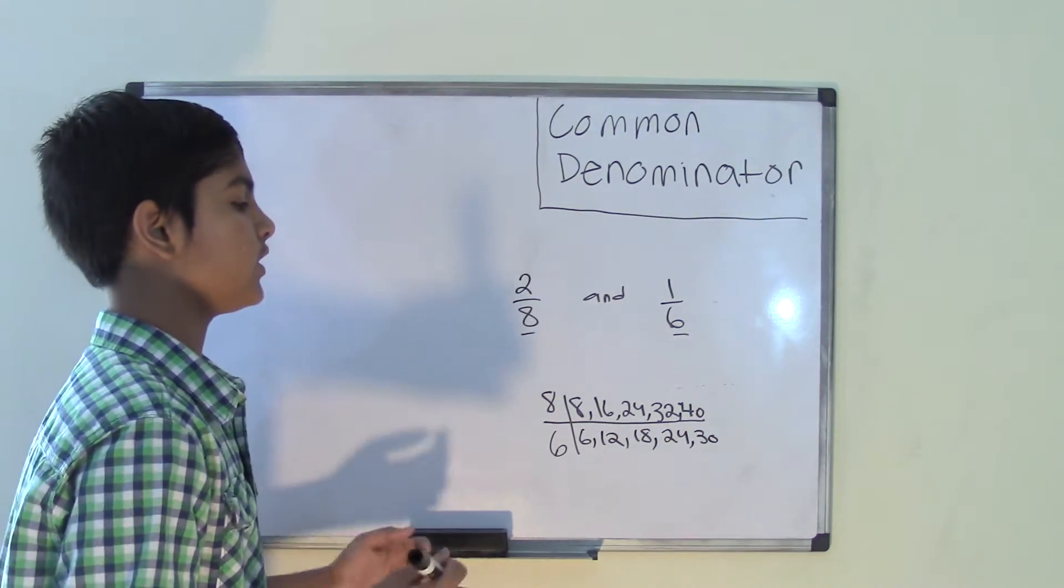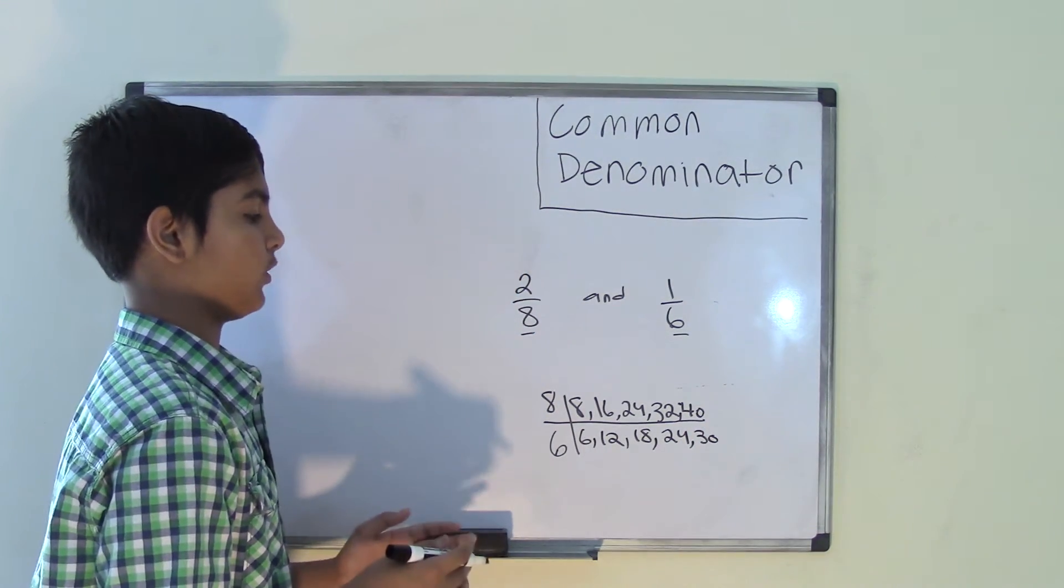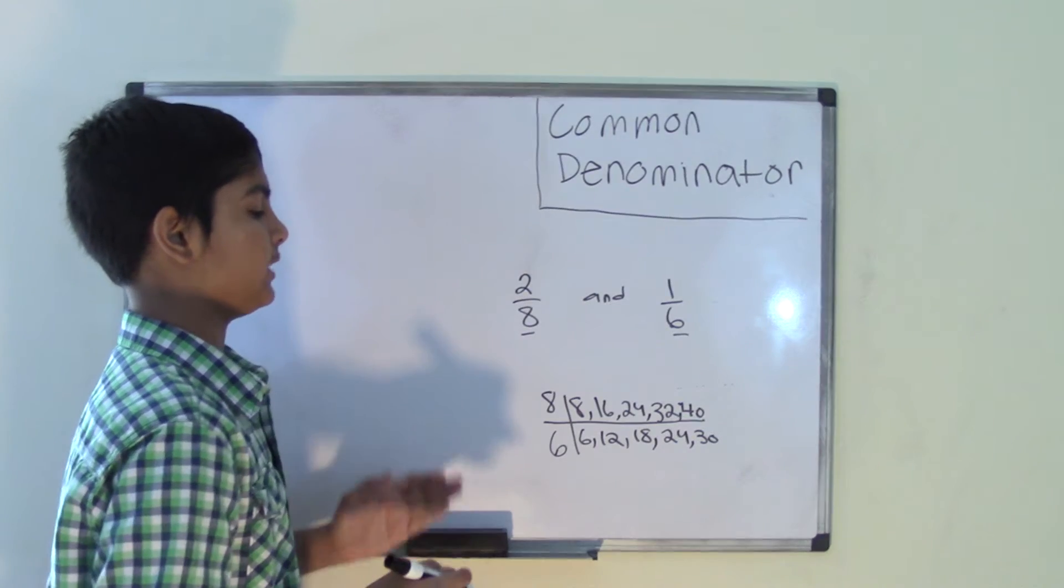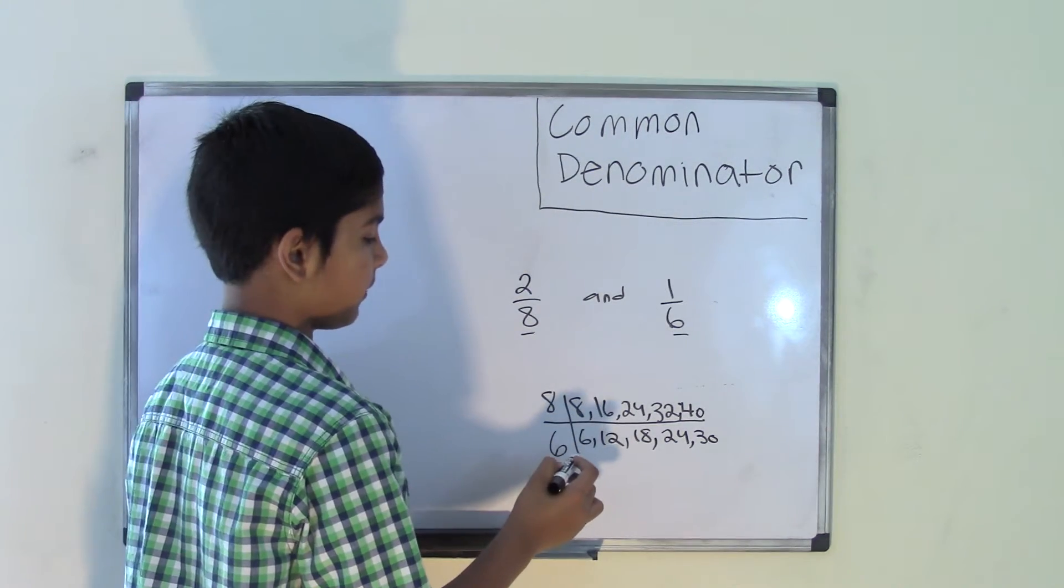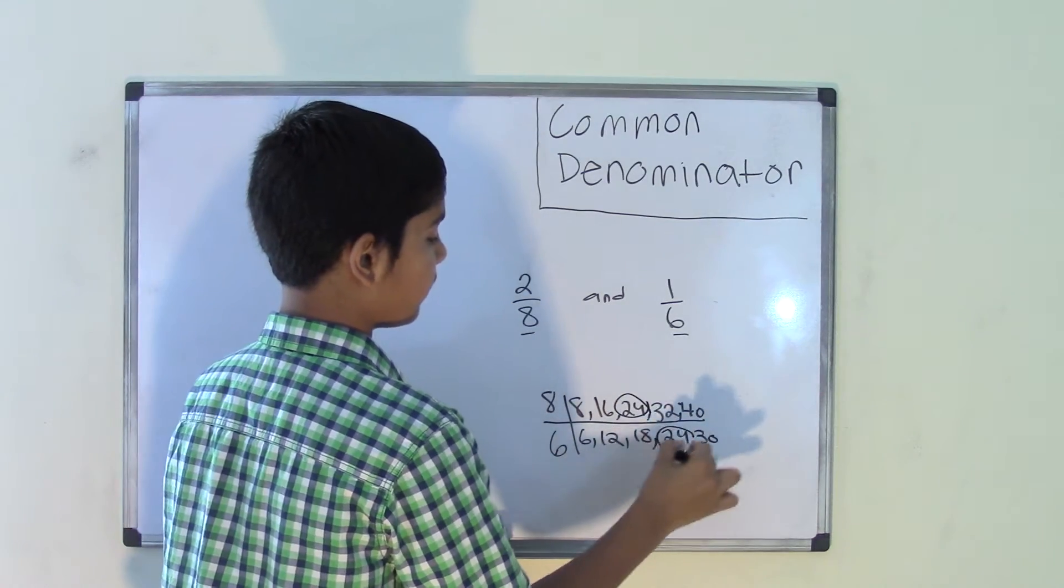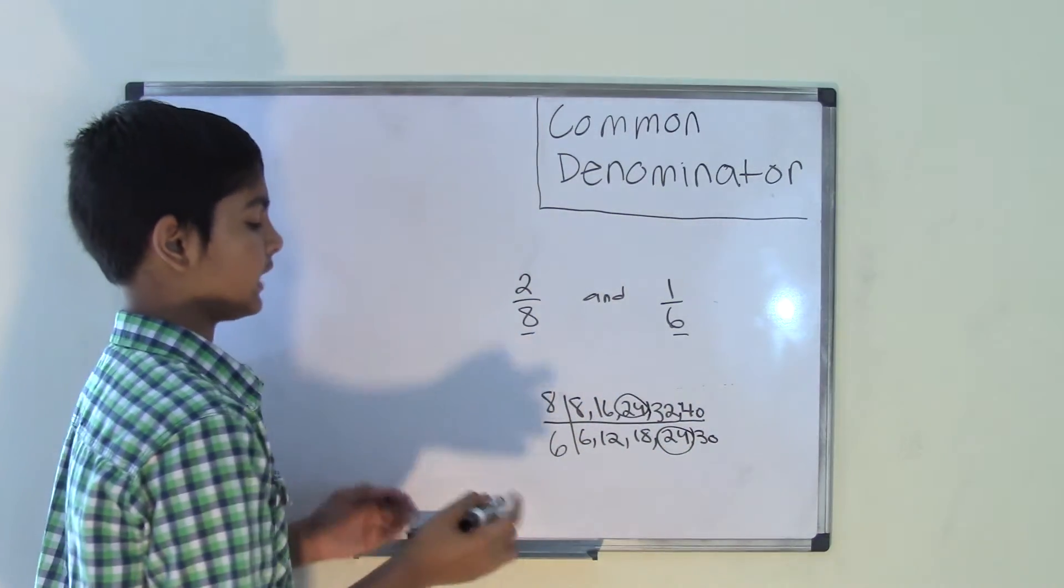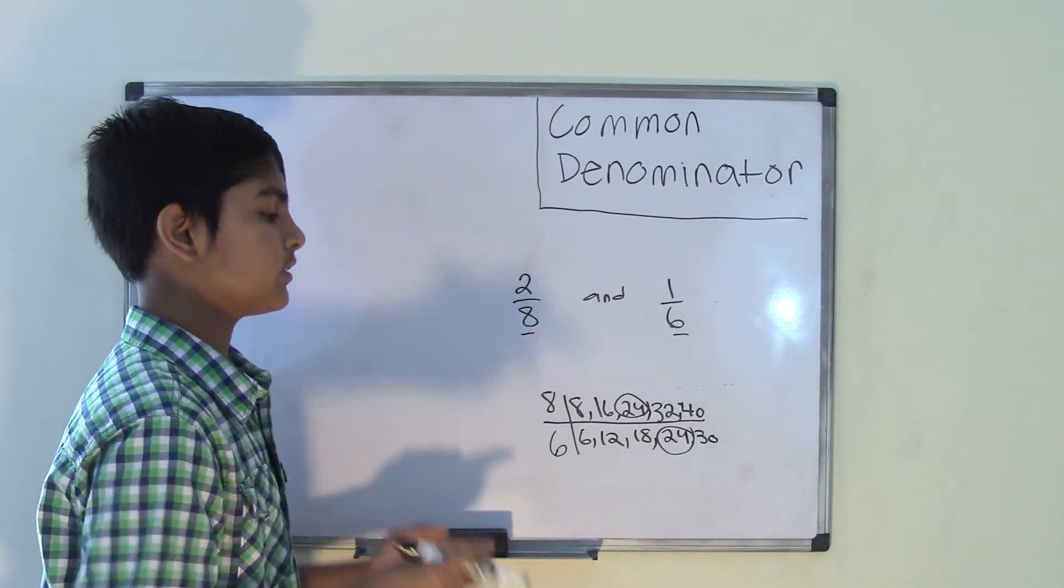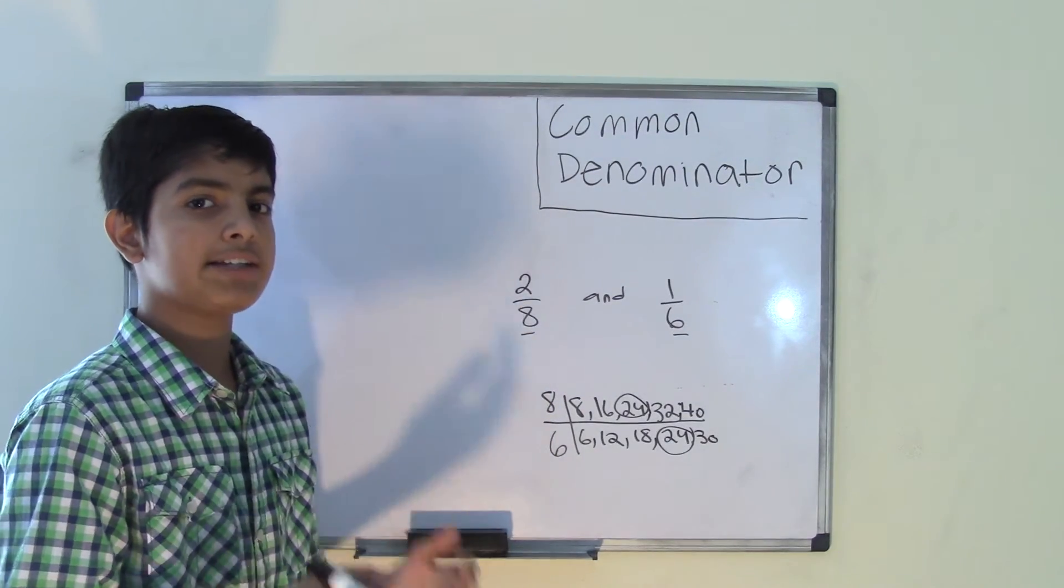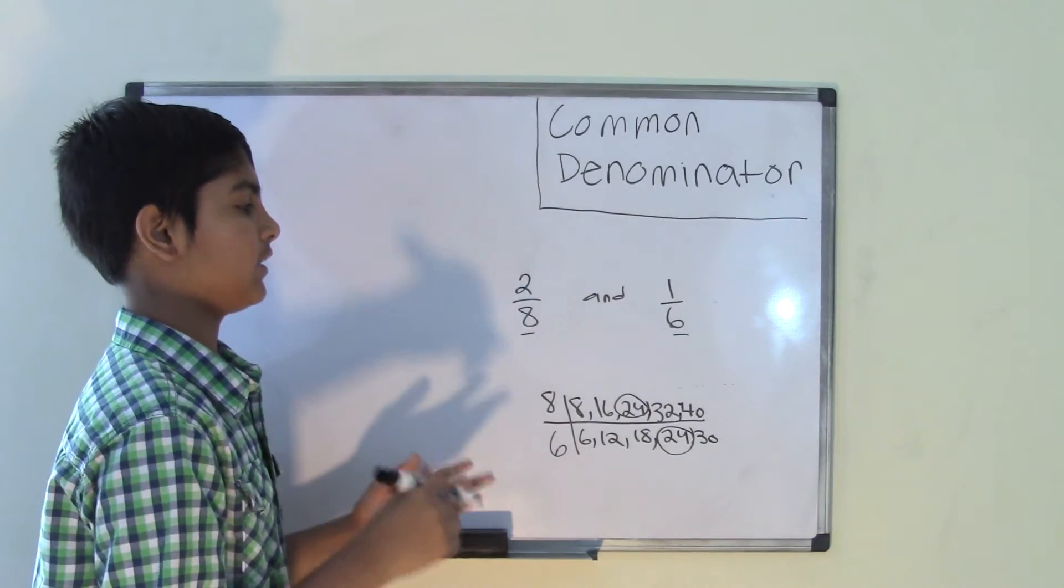Now we need to find the common multiples of the two numbers 8 and 6. The first common multiple is 24. Both 8 and 6 have the common multiple 24. Since it's the first common multiple, it is our least common multiple, the LCM.